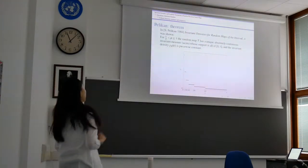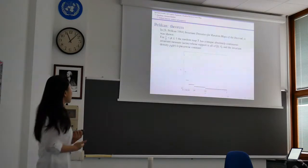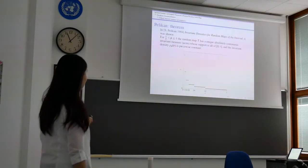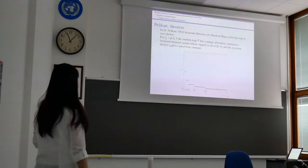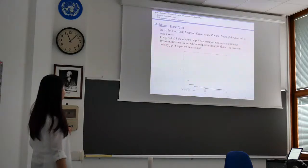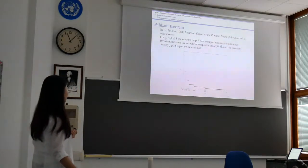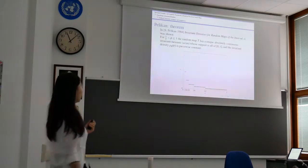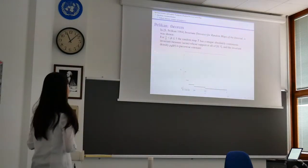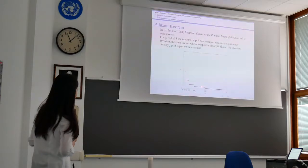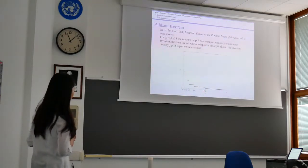The first part is about ergodicity of the system. I studied Pelikan's paper on invariant densities for random maps of the interval. He showed that for p between 1/2 and 1, this random map T has a unique absolutely continuous invariant measure with support on the whole unit interval. The invariant density rho(x), which depends on p, is piecewise constant. At each sub-interval it is a constant, and as x goes to 0 the value of the constant increases.